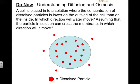What you see on the screen is a picture I want you to consider. Imagine that the blue cell in the middle of the screen has both dissolved solute on the inside and on the outside of the cell. As you can see, there is more dissolved solute on the inside compared to the outside. Can you make a prediction as to the direction those dissolved solute particles will move — will they move out of the cell or into the cell?